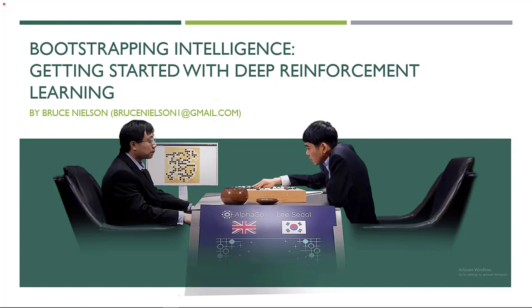A couple of years ago I was asked to do a presentation on reinforcement learning — that was just regular reinforcement learning. This time we're going to be talking about deep reinforcement learning. I'm repeating some of what I said before in a stripped-down version of my previous talk, but I'll explain how reinforcement learning and deep reinforcement learning differ. The reason I call this 'bootstrapping intelligence' is because that's actually how deep reinforcement learning works. I'm surprised it works at all, to be perfectly honest.